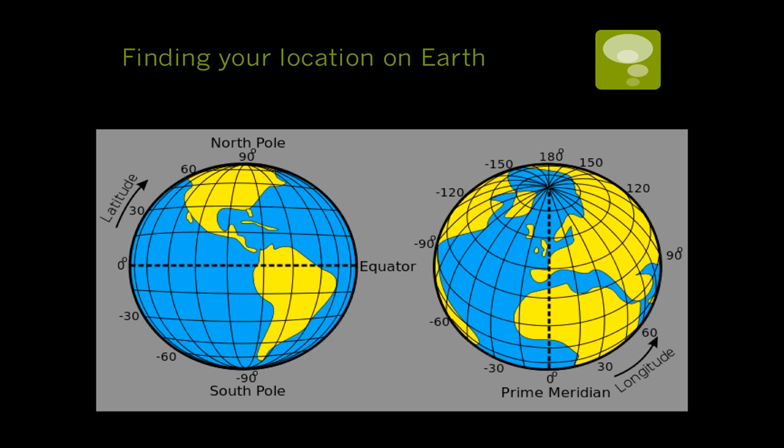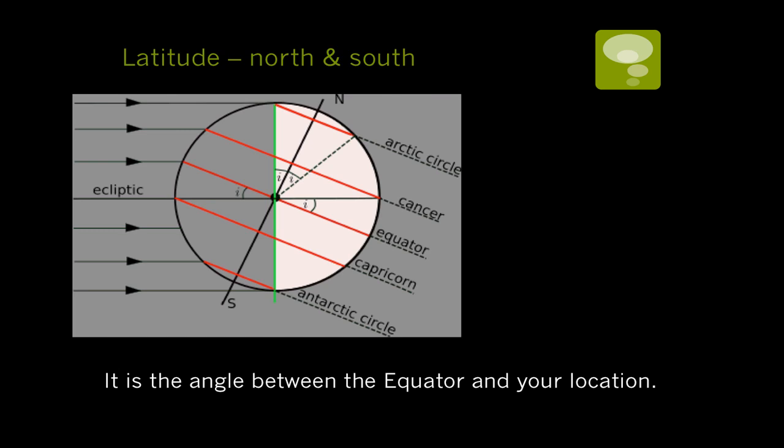Latitude measures your north to south position. It is the angle created between the equator and the center of the Earth. The larger that angle is, the larger your latitude. You can see an example of that angle being measured right here.